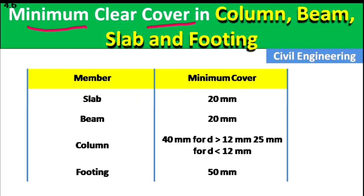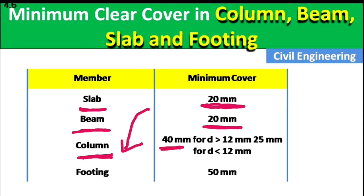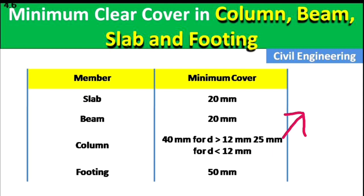Now, the main topic: the minimum clear cover for column, beam, slab, and footing. For slab, the minimum clear cover is 20 mm. For beam, it is 25 mm. For column, since it bears load and higher compressive stress, we provide 40 mm — but if the steel rod diameter is less than 12 mm, we can provide 25 mm for economical purposes.